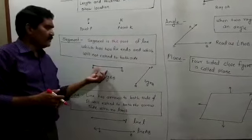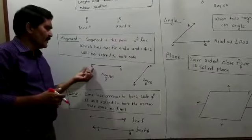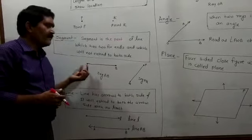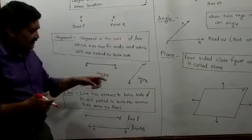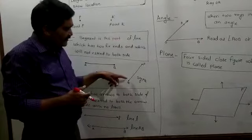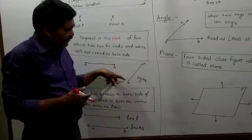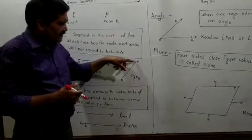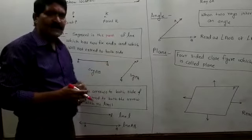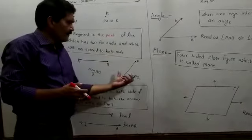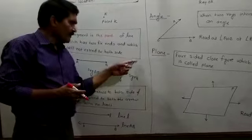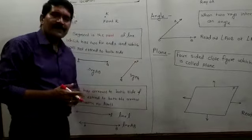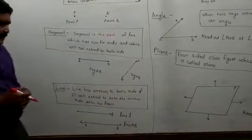If you want to read this segment, you will read it as 'seg AB' or 'seg BA' — they are one and the same. Here is another segment PQ, where P and Q are the two fixed ends. You will read this as 'seg PQ' or 'seg QP' — the meaning is one and the same.